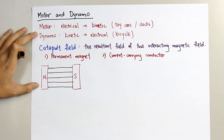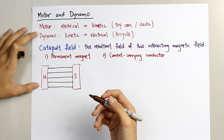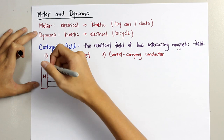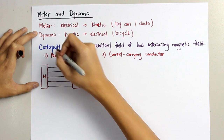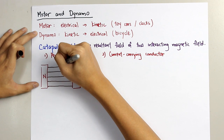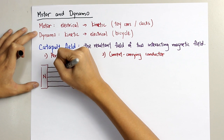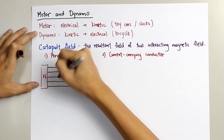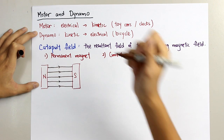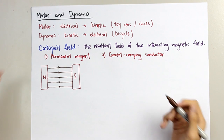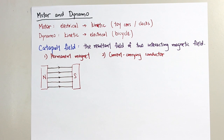The field lines are parallel to the surface, and the direction — don't forget — is from north to south. So this is the magnetic field of a permanent magnet.